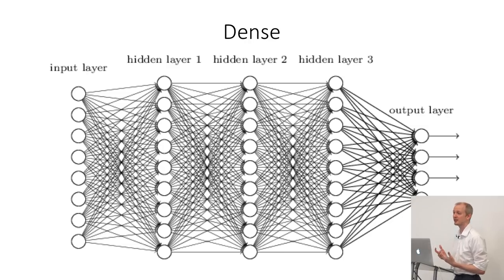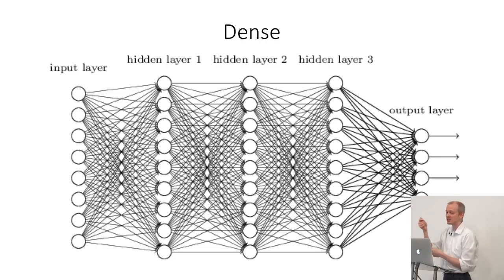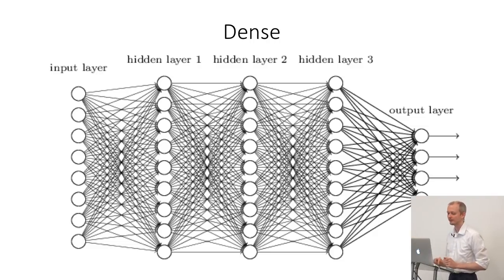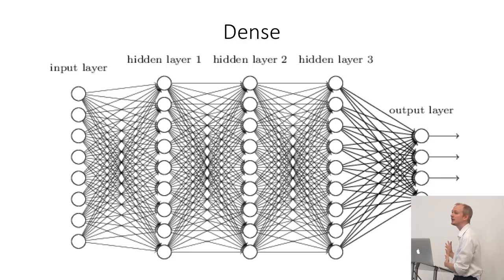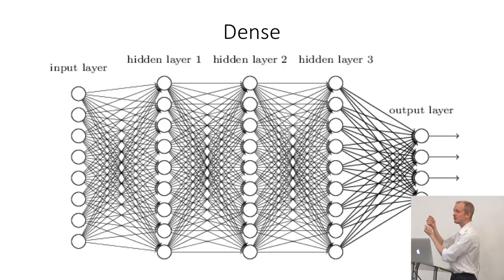A dense network looks something like this: you have an input layer with some neurons — these are the actual locations where your input is going to be fed. If you are telling your model about the colors of certain pixels, you will literally say this pixel is represented by this particular neuron, and whatever the value of that pixel it'll be converted to a number and fed in. It's called dense because every single neuron in a subsequent layer is connected to every neuron in the input layer before it. You stack enough of these together, then bring it down to a certain few number of neurons at the output.